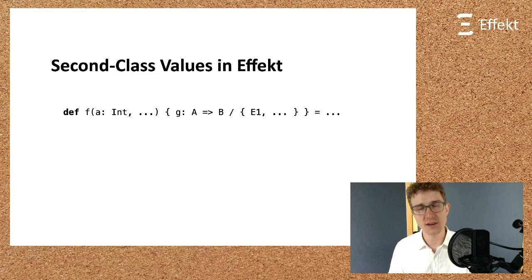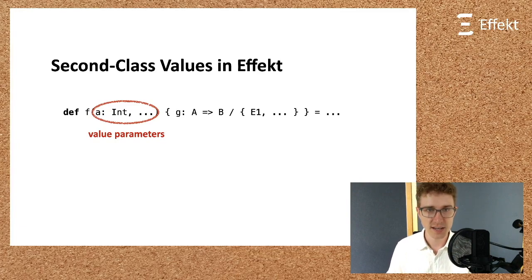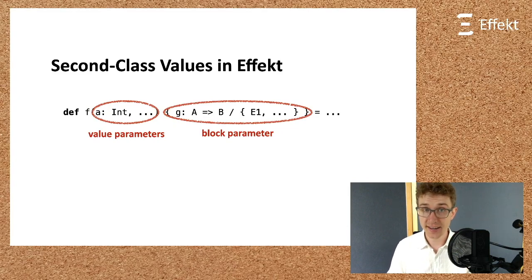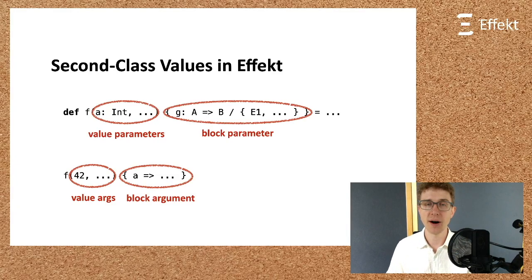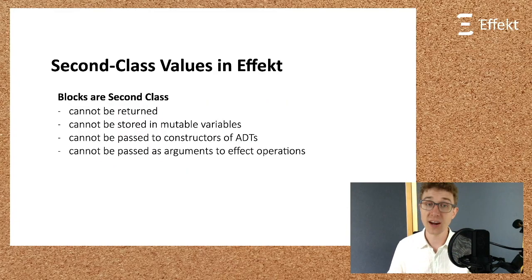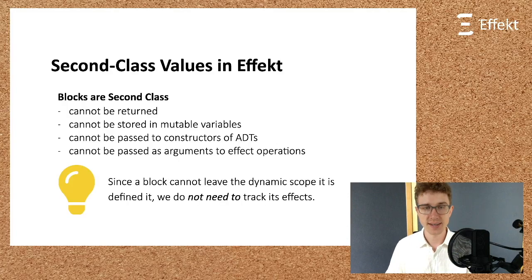The distinction between values and blocks also shows up in the syntax of our language, both in abstractions, where we expect value parameters in parentheses and block parameters in braces, and in application, where again value arguments are passed in parentheses and block arguments are passed in braces. To drive that point home again, blocks in Effekt are second-class. They cannot be returned, they cannot be stored in mutable variables, they cannot be passed to constructors of algebraic data types, and they can also not be passed as arguments to effect operations. So since a block cannot leave the dynamic scope it is defined in, we do not need to track its effect. However, tracking the effect is sometimes desirable, as I will illustrate now.